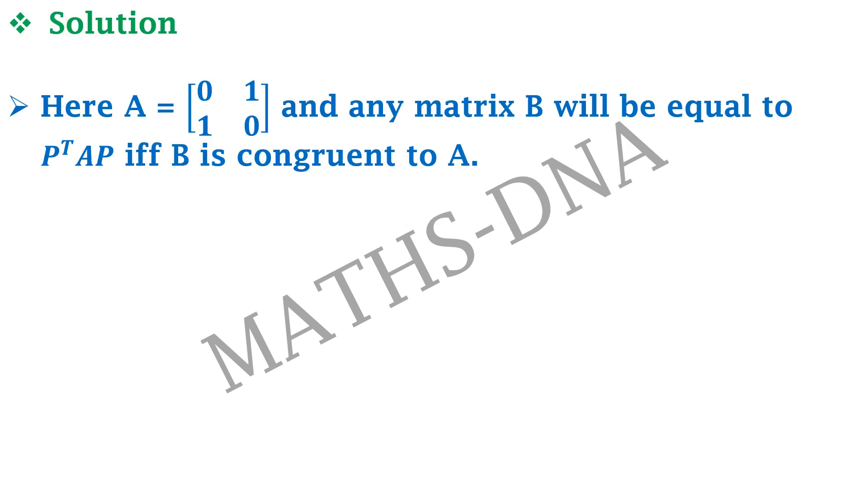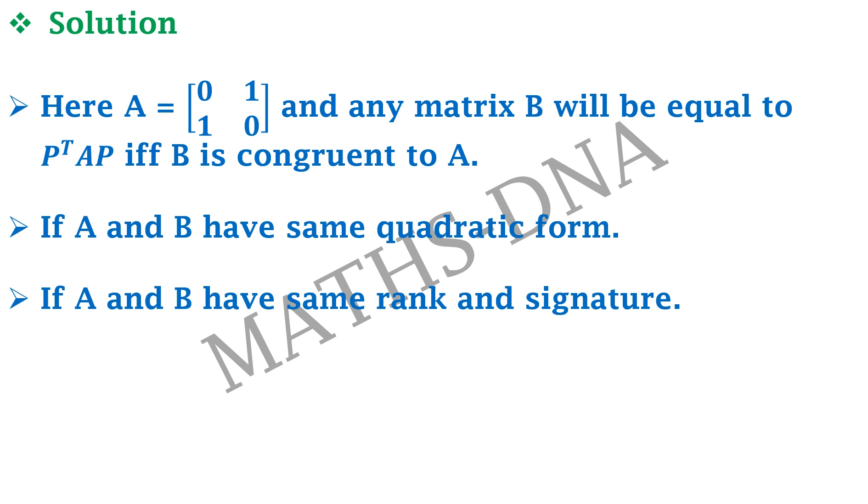Now let us solve the question. In the question, it is given to us that we have to find a matrix B that will be congruent to A. And we know that for any matrix B to get it equal to P transpose AP, it should be congruent to A. Now when will a matrix be congruent to another matrix? If both the matrices have same quadratic form. And when will both the matrices have same quadratic form? If both the matrices have same rank and same signature.